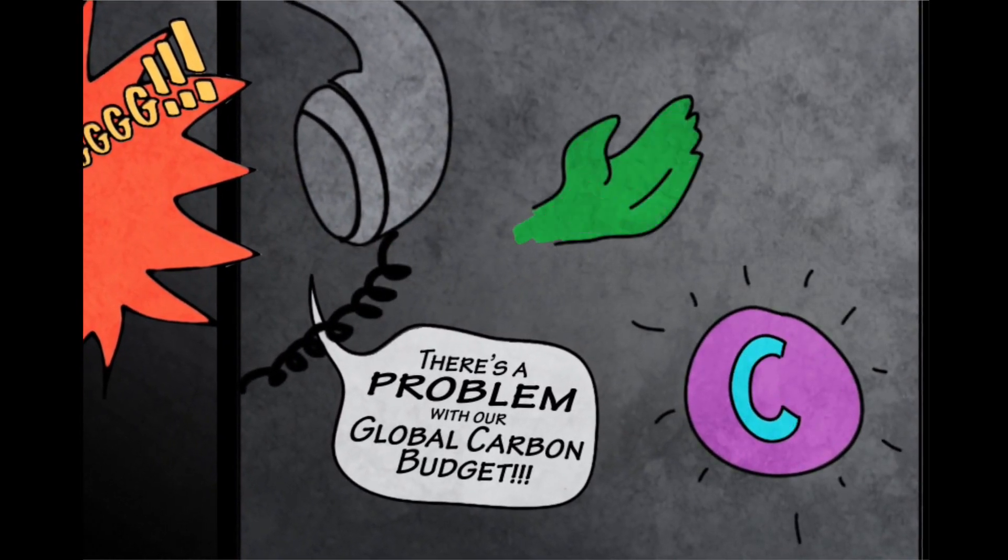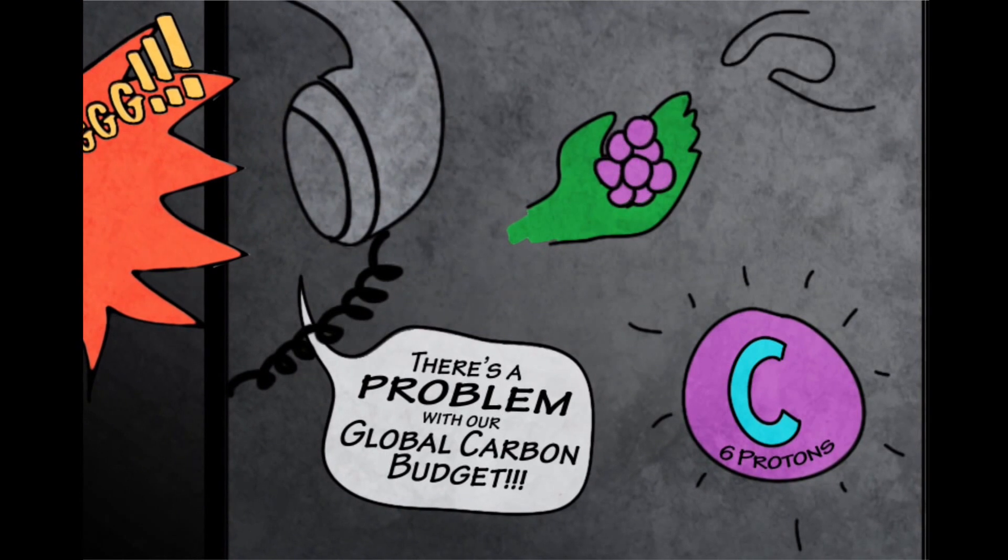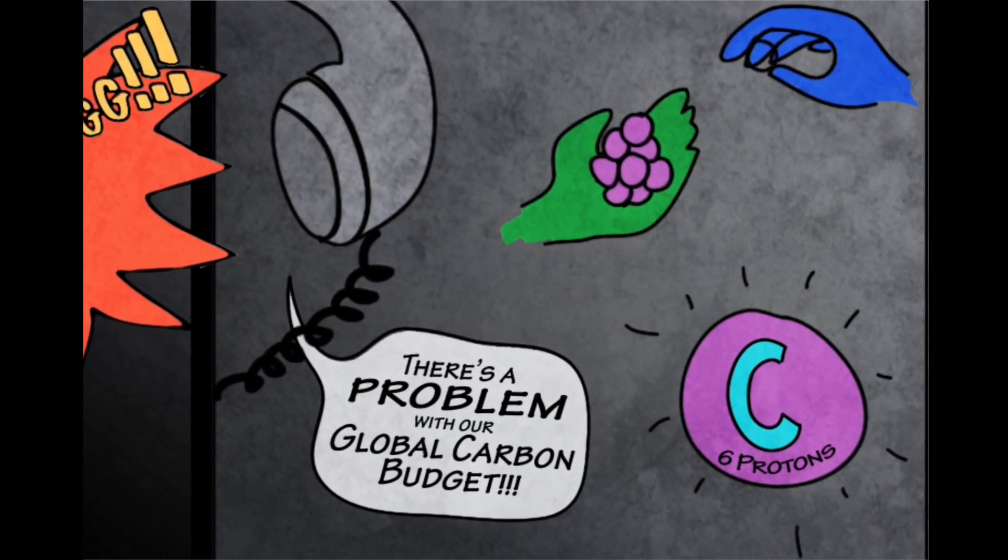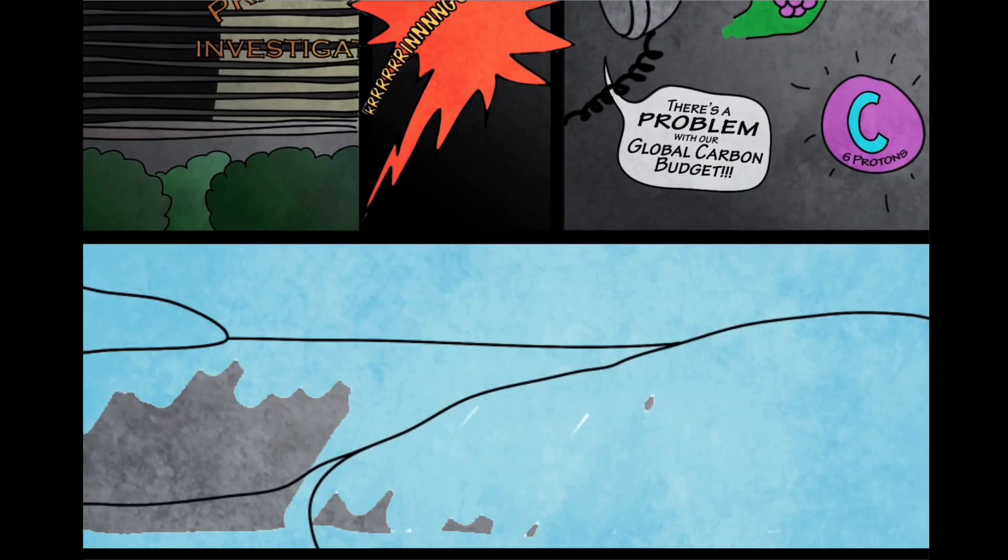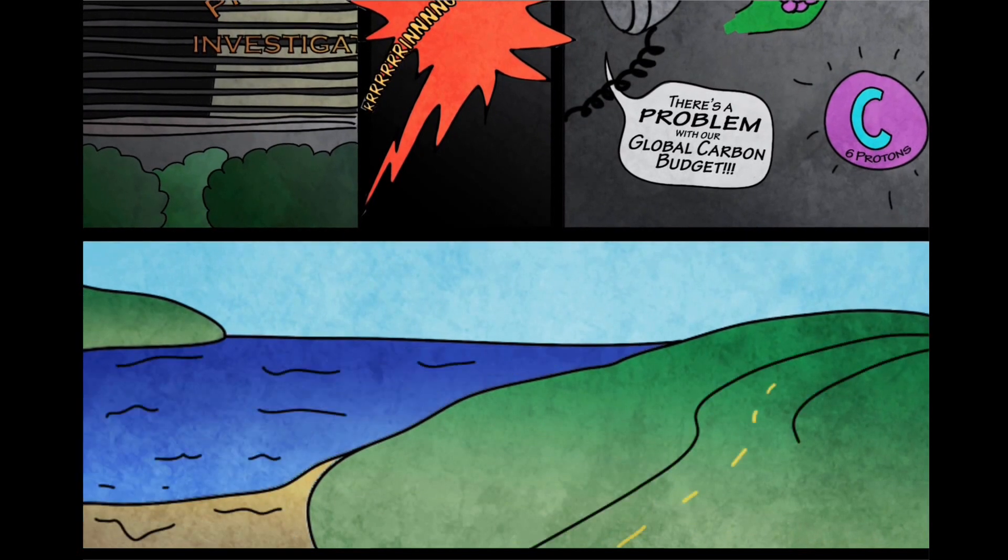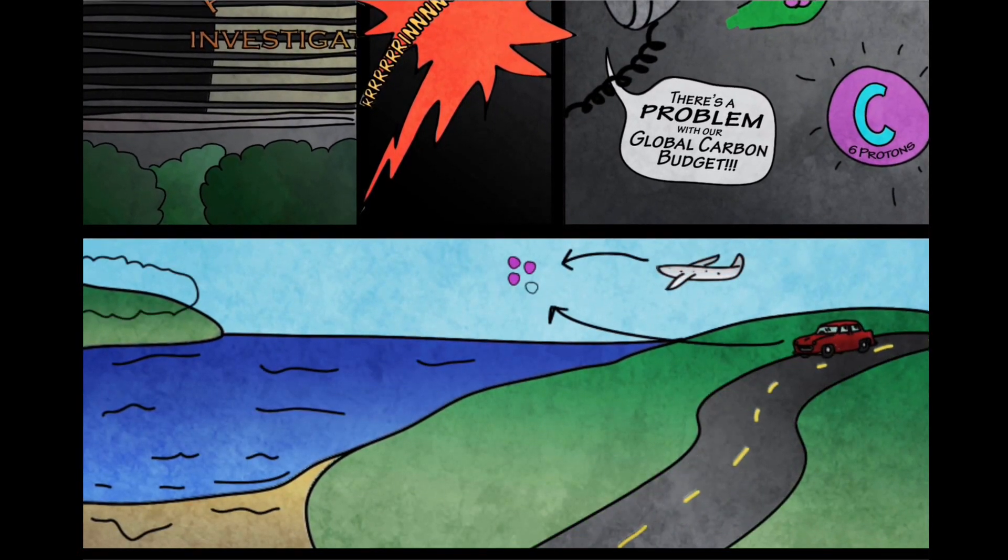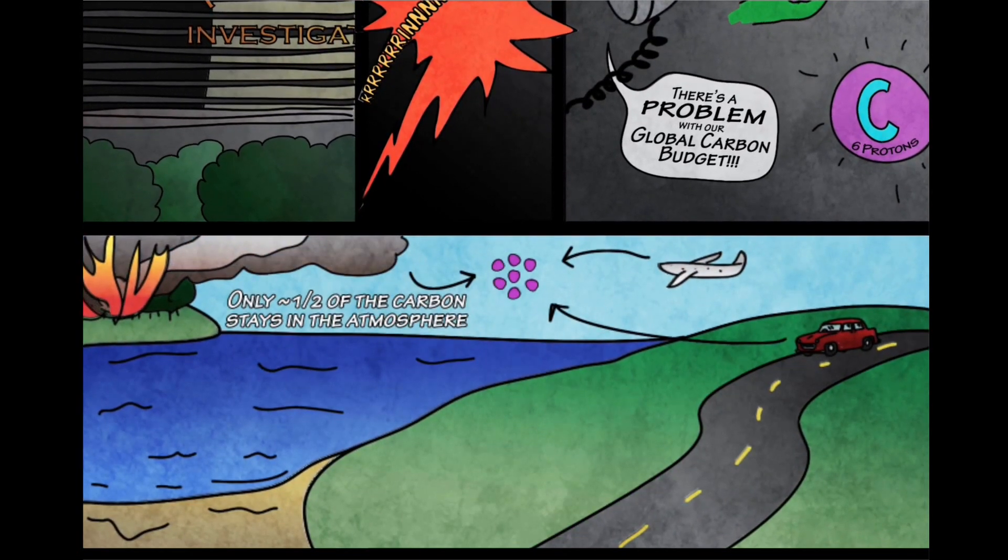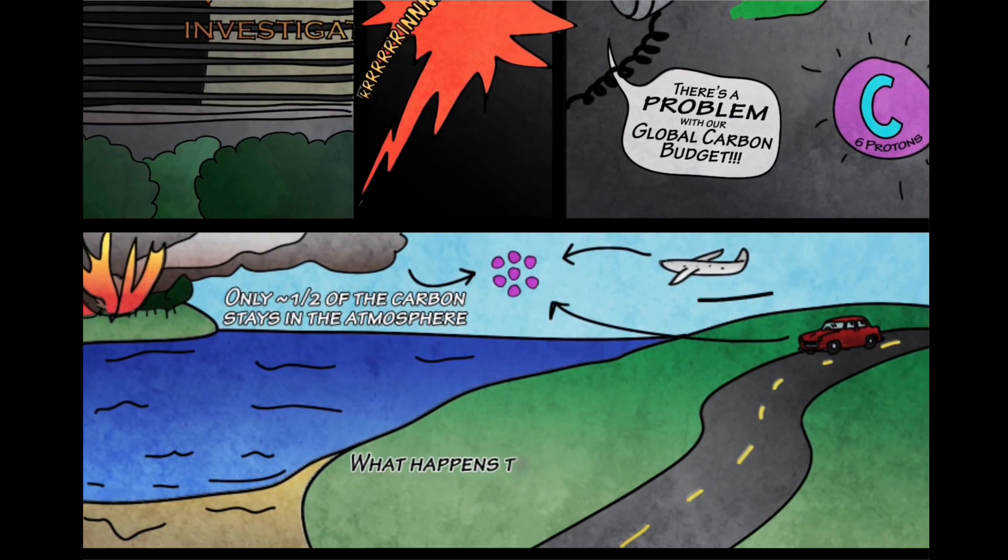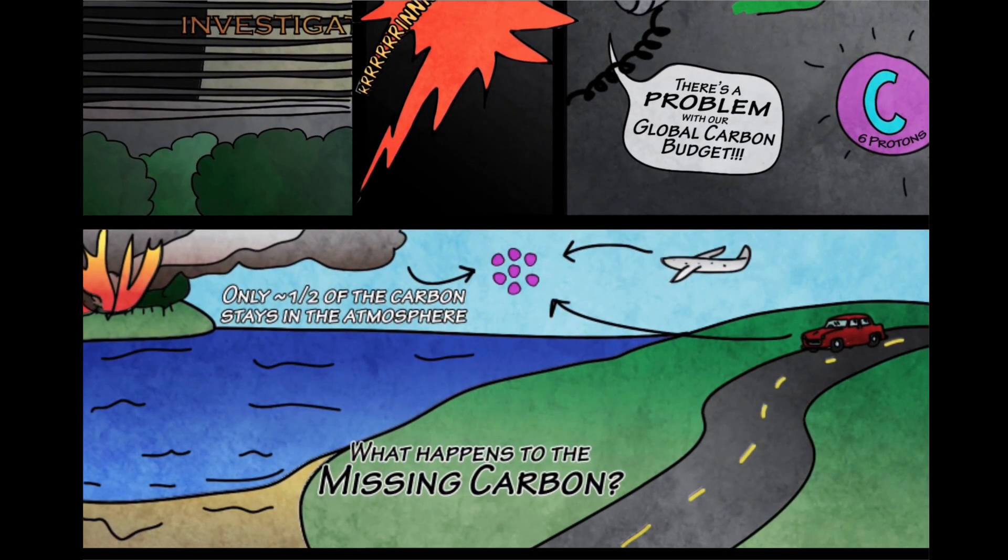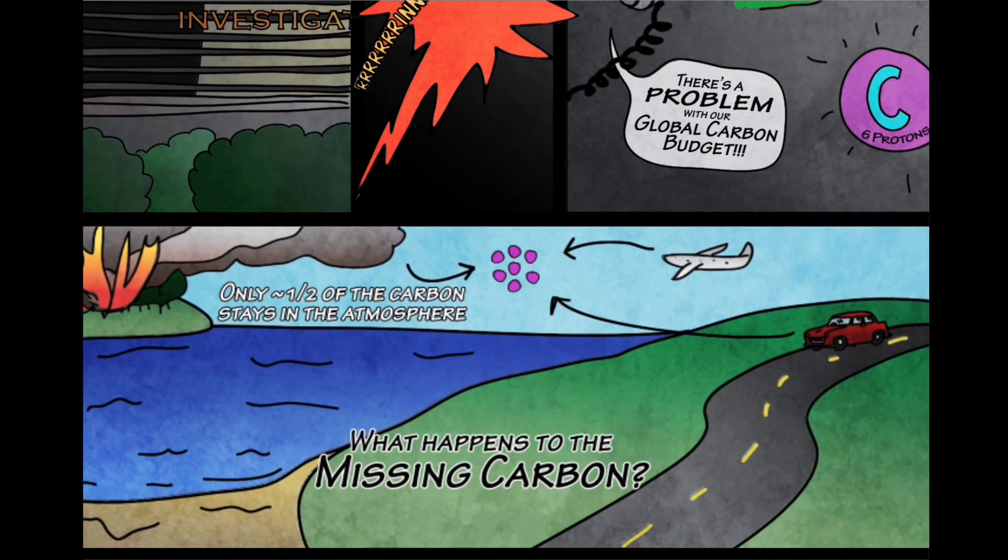The sources and sinks were trading their atomic number sixes around as usual, but the numbers just weren't adding up. We could pin down what was going into the atmosphere, from cars and planes and forest fires, but when we tried to track it further, we were coming up short every time. It was clear that someone was skimming a little off the top.